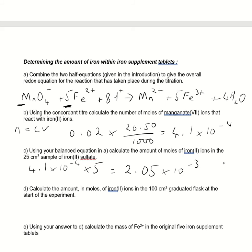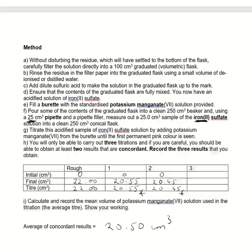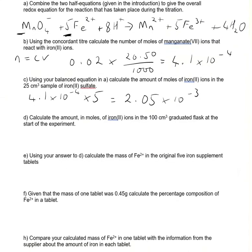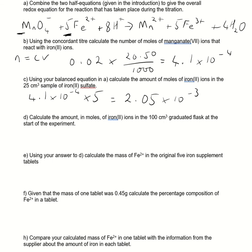Now calculate the amount in moles of iron within the 100 cubic centimeters graduated flask at the start. Because your tablets were made up into this. So you put all of the tablets essentially into that 100 cubic centimeter flask, and then you took little portions out from them. So if we know the number of moles in 25, to get the number of moles in 100, well there's four 25s in 100. So essentially I'm just doing 100 divided by 25, so that equals 4. So I've got four lots of this. So 2.05 times 10 to the minus 3 times 4. And that gives me 8.2 times 10 to the minus 3 there.